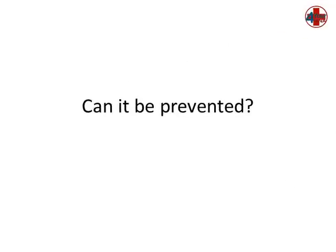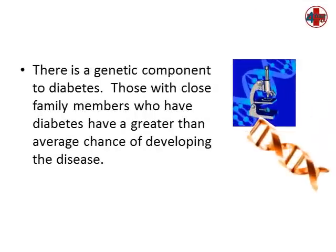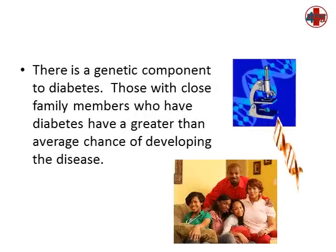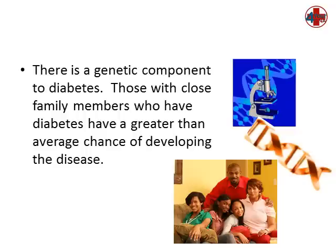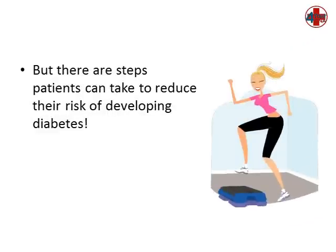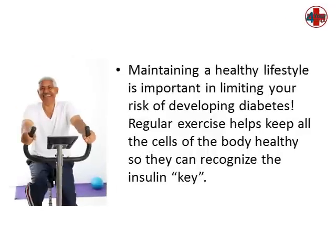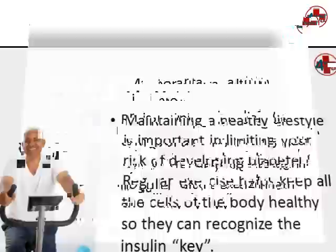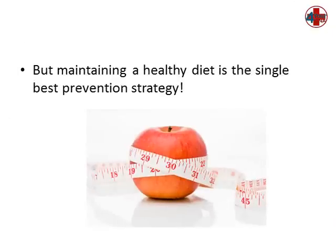Can it be prevented? There is a genetic component to diabetes. Those with close family members who have diabetes have a greater than average chance of developing the disease. But there are steps patients can take to reduce their risk of developing diabetes. Maintaining a healthy lifestyle is important in limiting your risk. Regular exercise helps keep all the cells of the body healthy so they can recognize the insulin key. But maintaining a healthy diet is the single best prevention strategy.